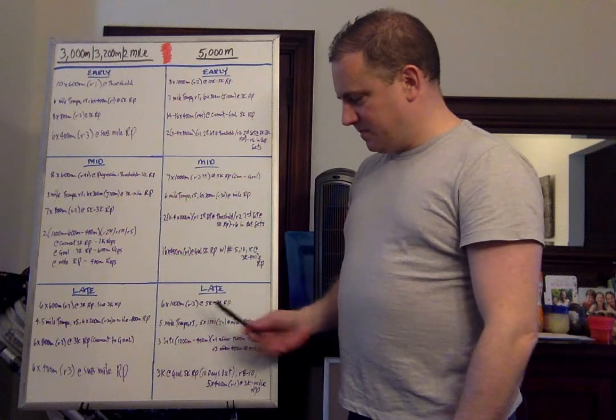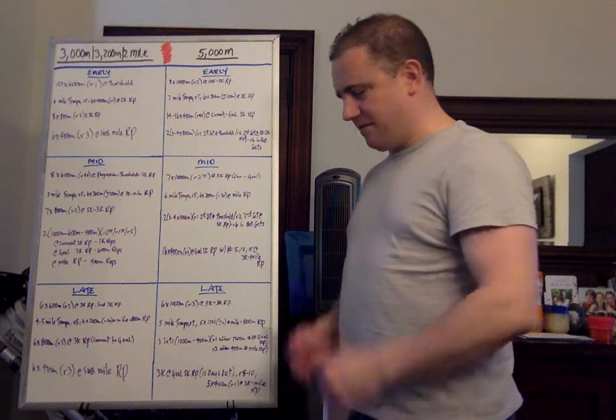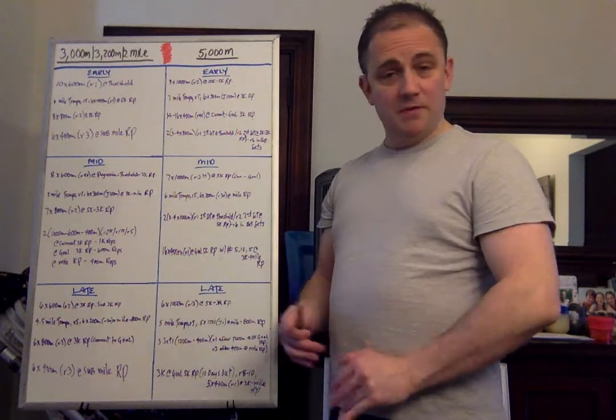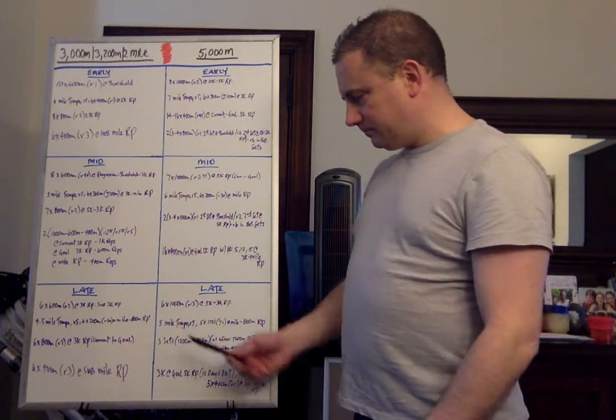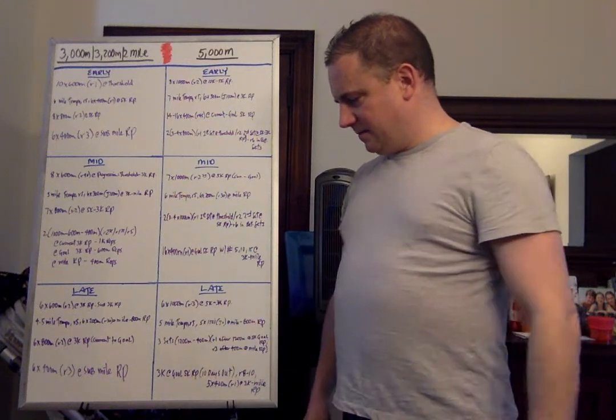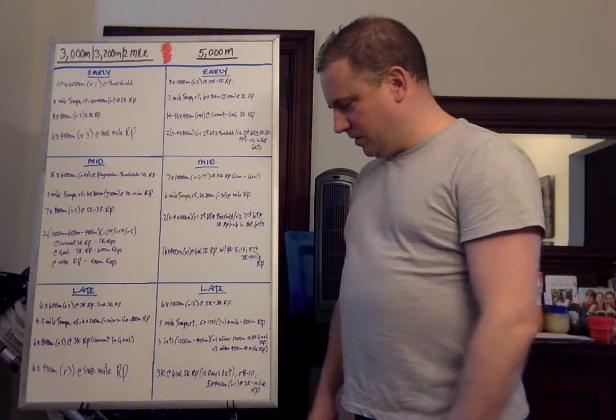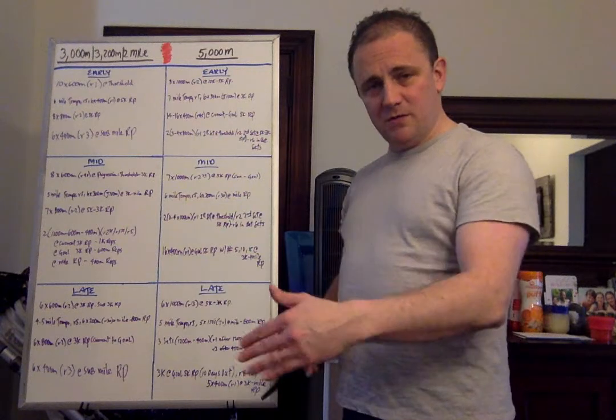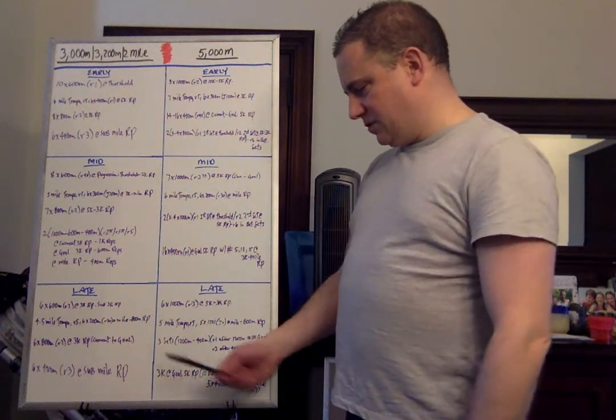And late season: six by 1,000 with a three-minute recovery. So we cut down the rep and add 30 seconds to the recovery at 5K to 3K race pace. You might be willing to do the last rep at 3K race pace. This should be goal 5K race pace. Next one: five-mile tempo, five-minute active recovery, and then five by 150-meter efforts with a jog equal recovery at mile down to 800-meter race pace, turning over when you're fatigued.